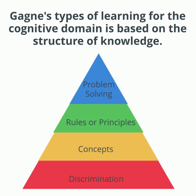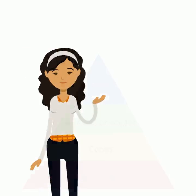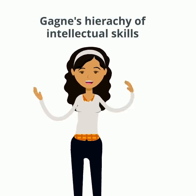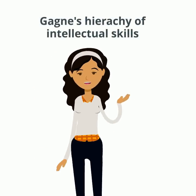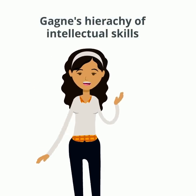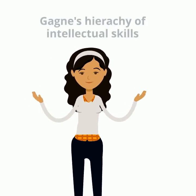Gagné's types of learning for the cognitive domain is based on the structure of knowledge. In Gagné's taxonomy, he placed the intellectual skills into a hierarchy. Gagné asserted that performance of the lower-level skills of the hierarchy are the prerequisite for performance at the higher levels.